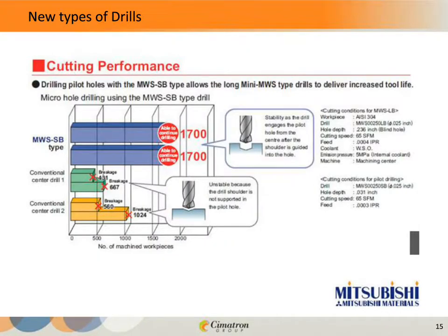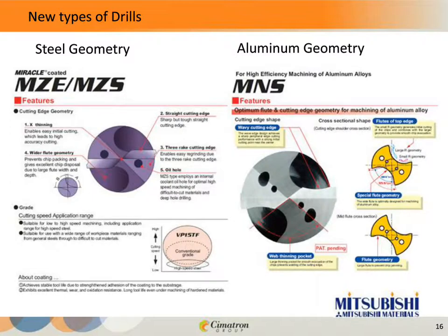A lot of these tools are going to require a pilot hole in order to keep the tool engaged — this was always true of gun drills. Even with solid carbide tools, when you get a diameter-to-length ratio above about five times the diameter, you're probably going to want a pilot hole to keep that drill on center and on size. Here we see a couple of different geometries: on the left, geometry well suited for steel, and on the right, geometry well suited for aluminum. There's a lot of engineering done to really fit everything about the tool to its application and material.